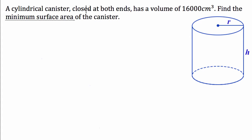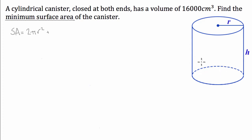We're going to need a formula to differentiate — in this case, that's the surface area. The surface area of a cylinder is equal to the area of the top and bottom, which is 2πr², plus the bit that wraps around. That part is like a rectangle with length equal to the circumference, 2πr, and width equal to the height h. That will be the function we differentiate.